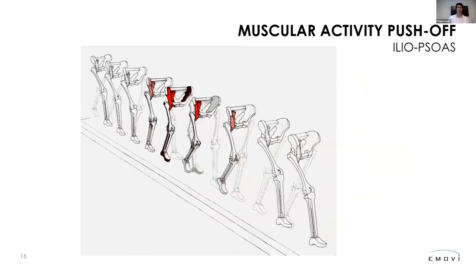One last note about push-off: the iliopsoas and dorsiflexors are among the only muscles during gait that perform a truly concentric contraction. All the others we've discussed are eccentric or stabilizers. Push-off is really the only phase where you see purely concentric muscle work.